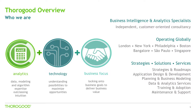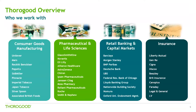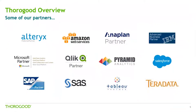For those of you who don't know Tharagood, we are an independent niche BI and analytics services firm specializing in strategy and roadmaps, requirements, design, implementation, training, and support. We are headquartered out of London with offices all over the world. Our clients typically span four data-rich verticals: consumer goods, pharmaceutical and health services, banking, and insurance, with experience across various functions of these verticals. We are an independent consulting firm, meaning we don't work with one specific technology, but we partner with many of the key players across the market to provide clients with the solution that best suits their needs.